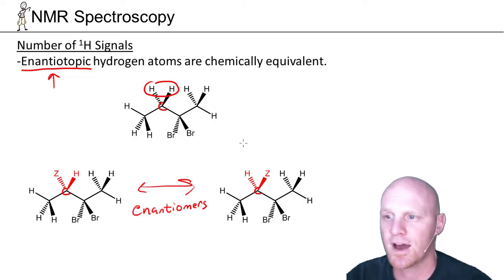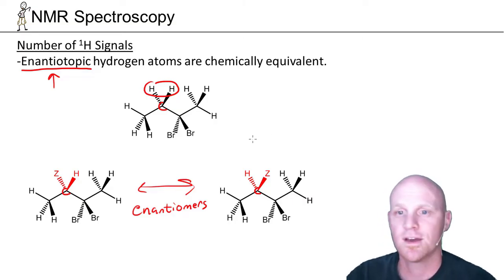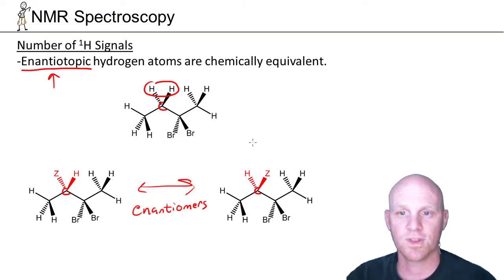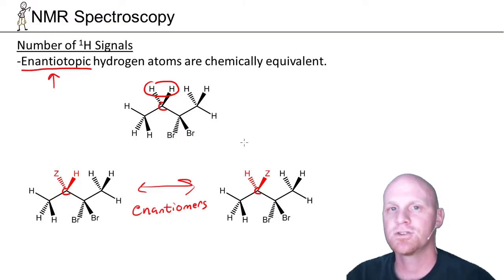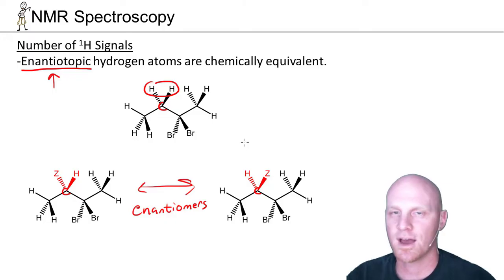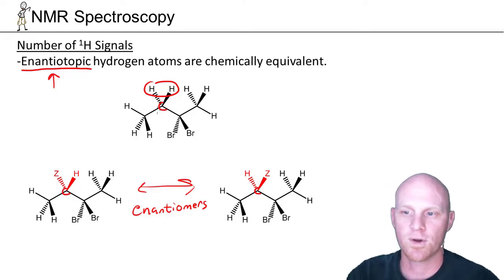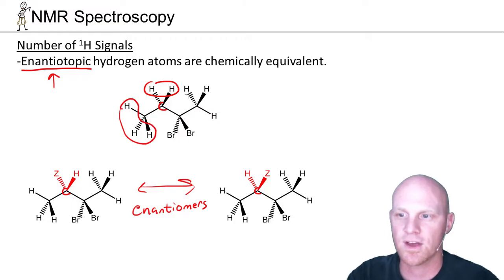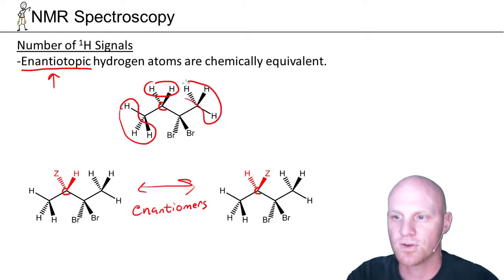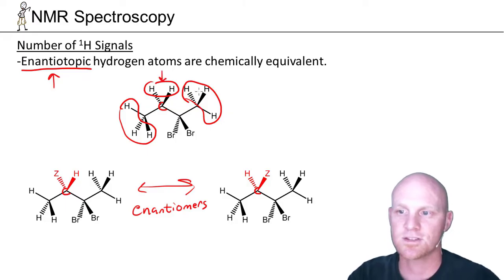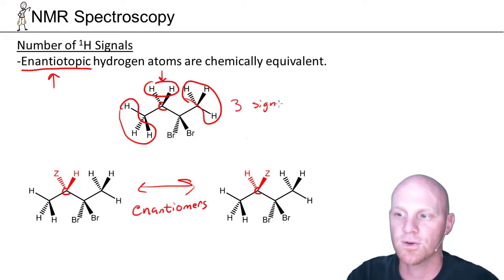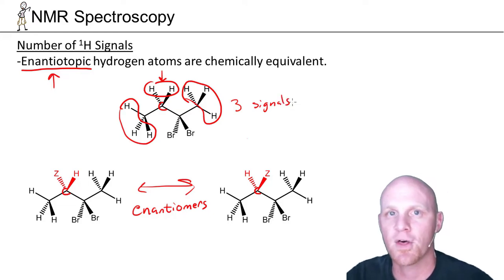Enantiotopic hydrogen atoms are chemically equivalent. You should know how to designate hydrogens as enantiotopic, but know that they give rise to the same signal. So if we count the total number of signals: these three H's are all equivalent due to free rotation, these three H's are also all equivalent due to free rotation, and these two enantiotopic H's are also equivalent — giving us only three signals in the HNMR spectrum.